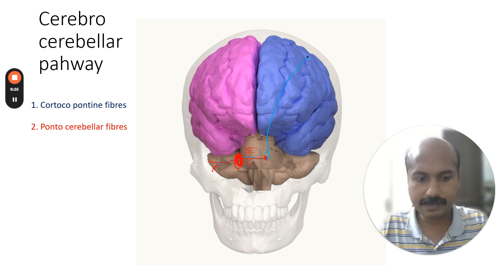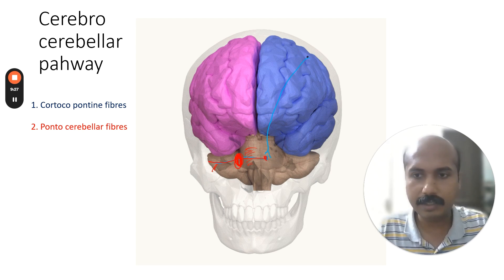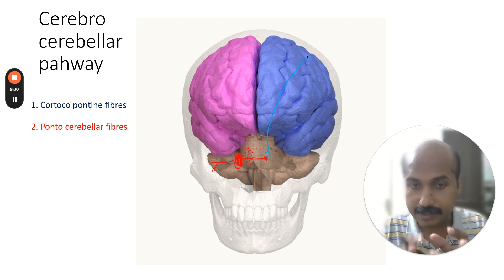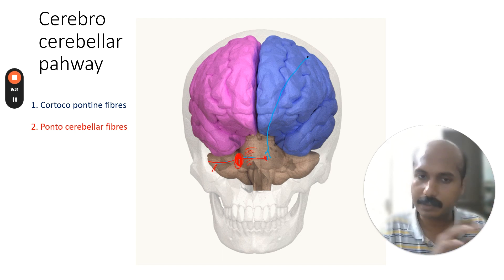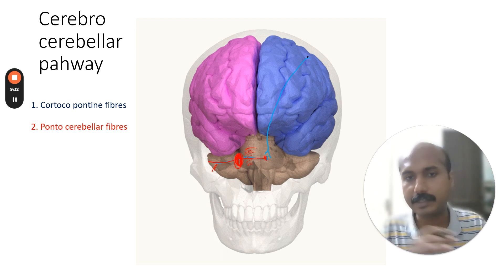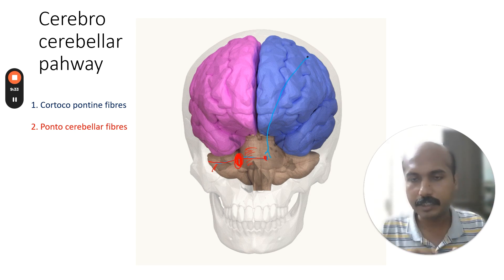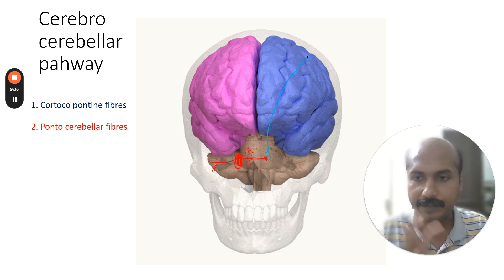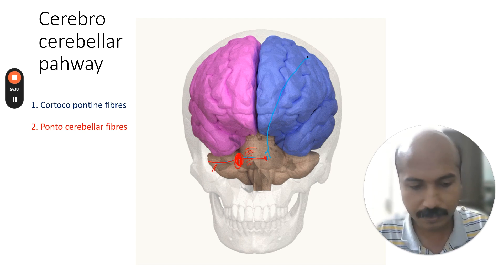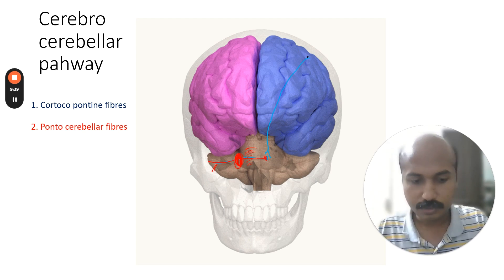This is a very important tract, and many lesions — in the basilar part of the pons, in the middle cerebellar peduncle, in the cerebellum, or in the cortex — can have effects on this corticopontocerebellar pathway. Thank you.